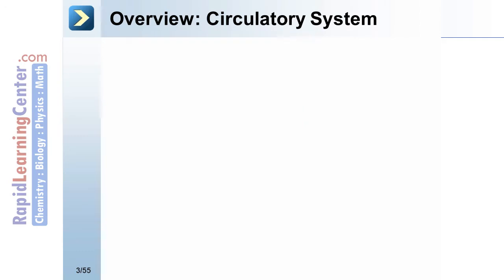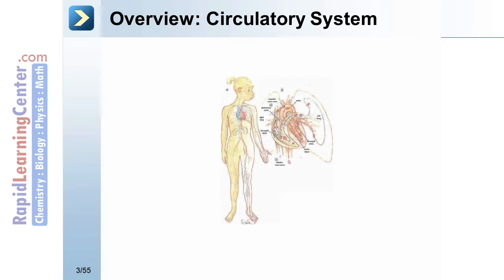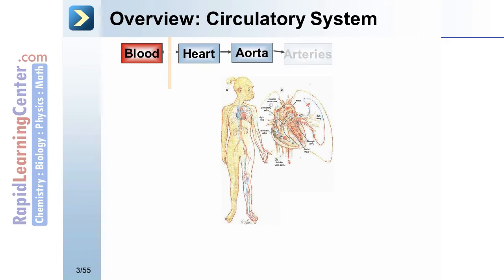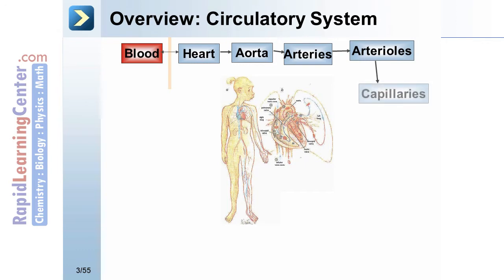Overview of the circulatory system. The circulatory system involves blood being pumped by the heart, going through the aorta, arteries, arterioles, to the capillaries, via the venules and veins.